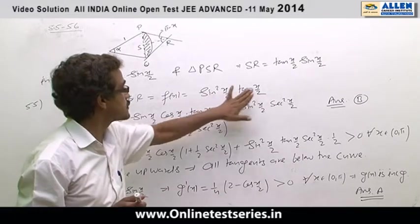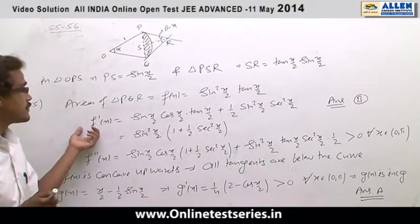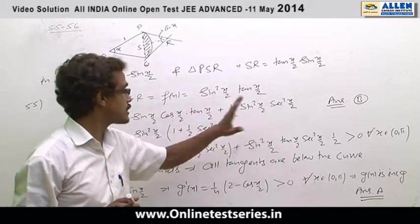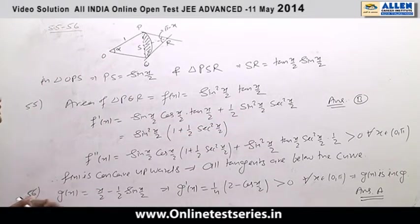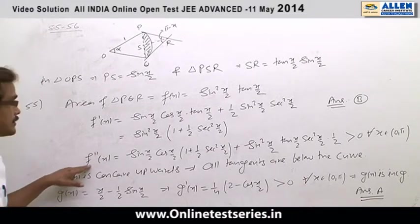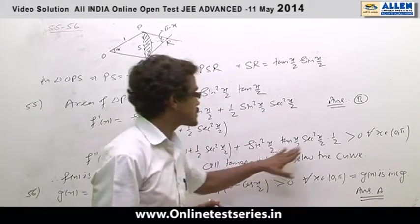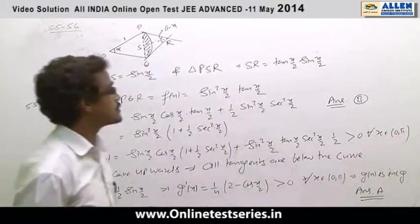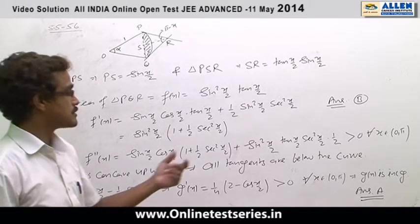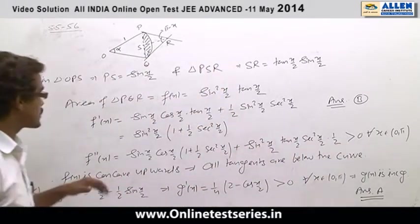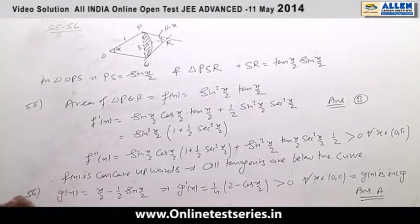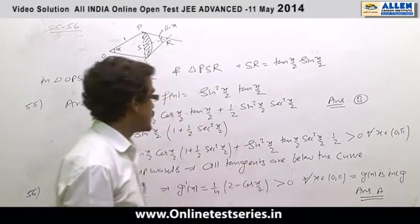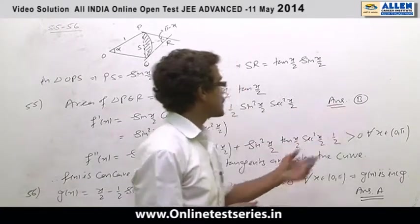Hence for question number 55, f(x) means area of triangle PQR becomes sin squared x by 2 times tan x by 2. The second derivative of this function is positive for all values of x belonging to 0 to pi, because x by 2 will be in the first quadrant where all ratios are positive. That's why the function is concave upwards, means all tangents are below the curve. So option B is correct.